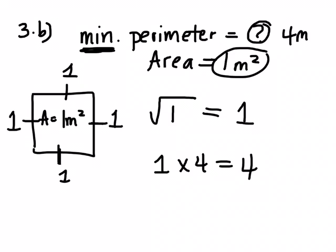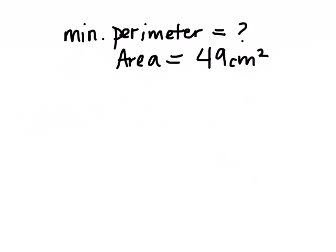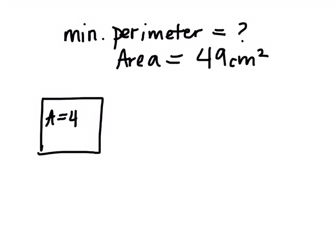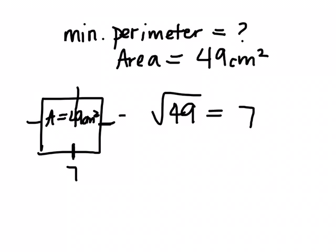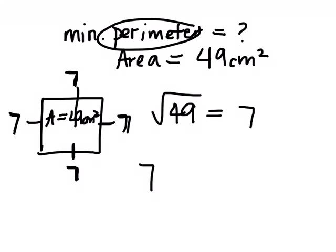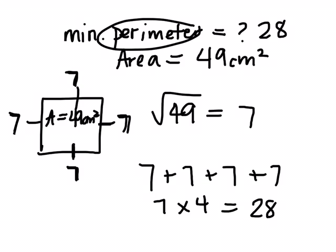Let's do another one because that example was easy since I used the number 1. What's the smallest perimeter you can get if the area is 49 centimeters squared? Again, what shape produces the smallest perimeter? Square. If the area is 49 centimeters squared, what's the length of each side? The opposite of squaring is square root — what times what gives me 49? 7 times 7 equals 49. So each side length is 7. To find the perimeter, 7 times 4 equals 28. The least possible perimeter is 28 centimeters.